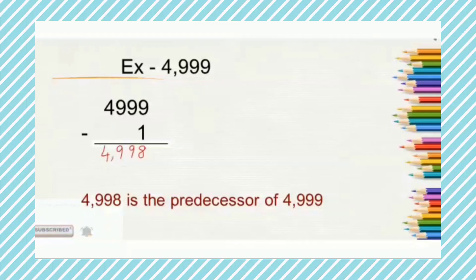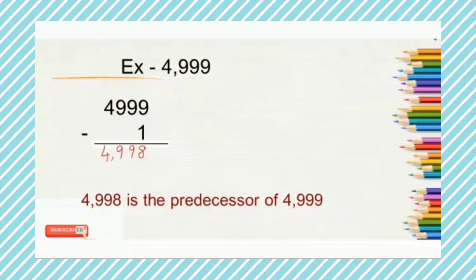In simple words, the before number is the predecessor of the given number. So 4,998 is the before number of 4,999. Therefore, 4,998 is the predecessor of 4,999.